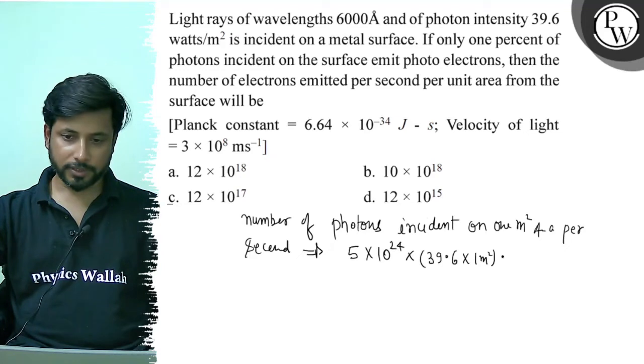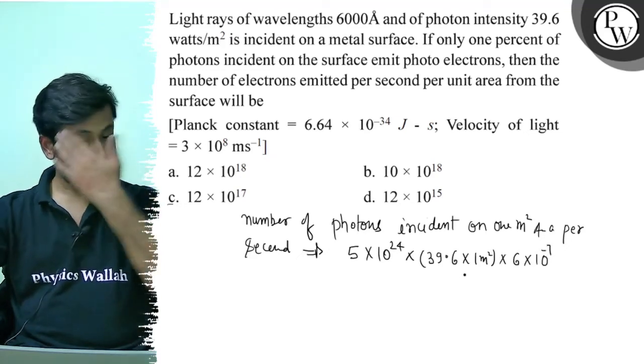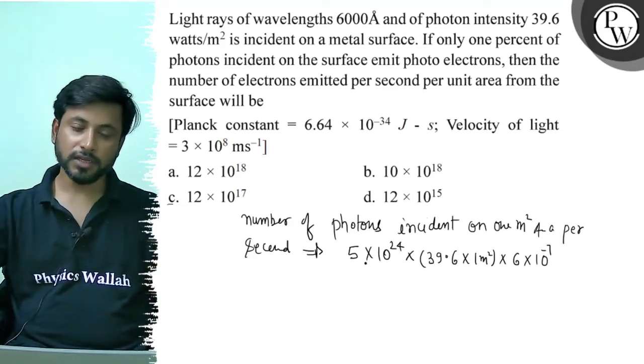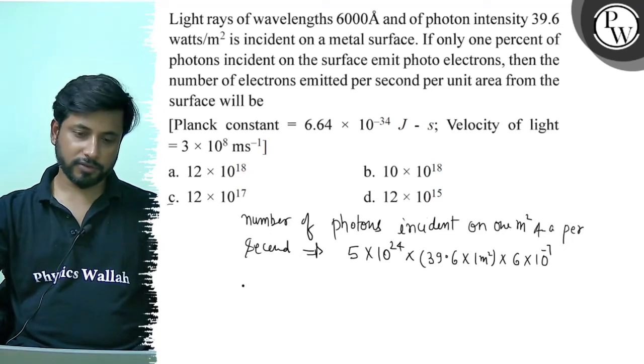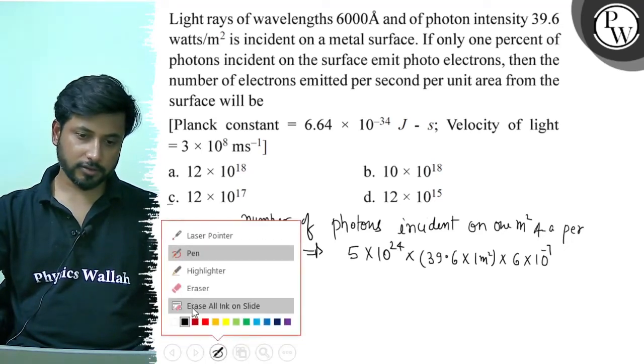Multiplied by lambda 6 into 10 to the power minus 7 angstrom. Now, only 1 percent of this emits electrons, so we take 1 by 10 to the power 2.